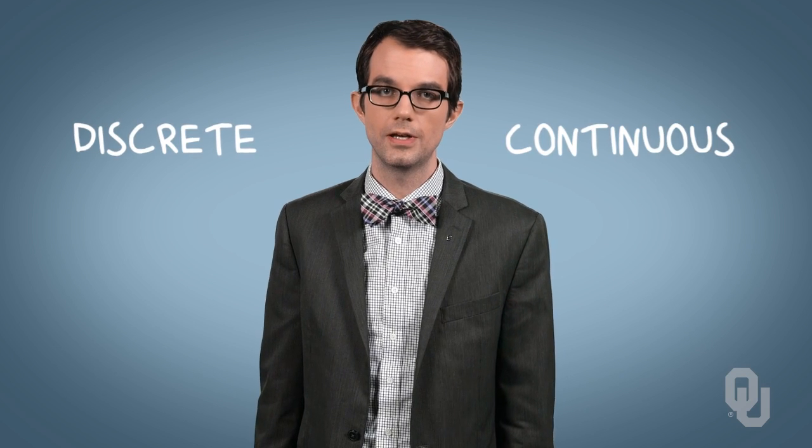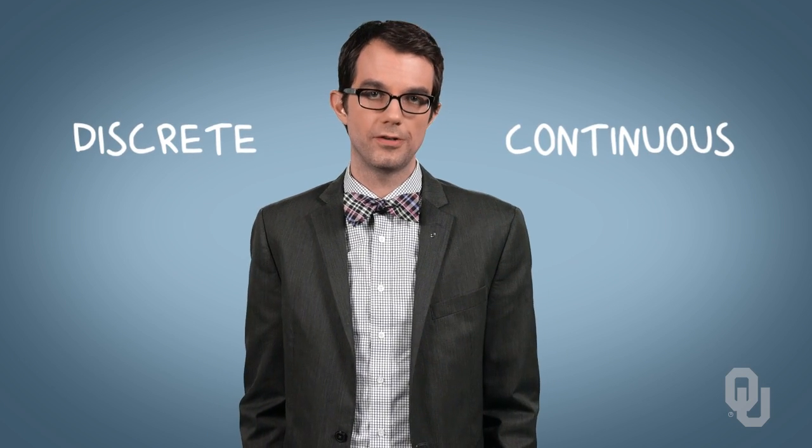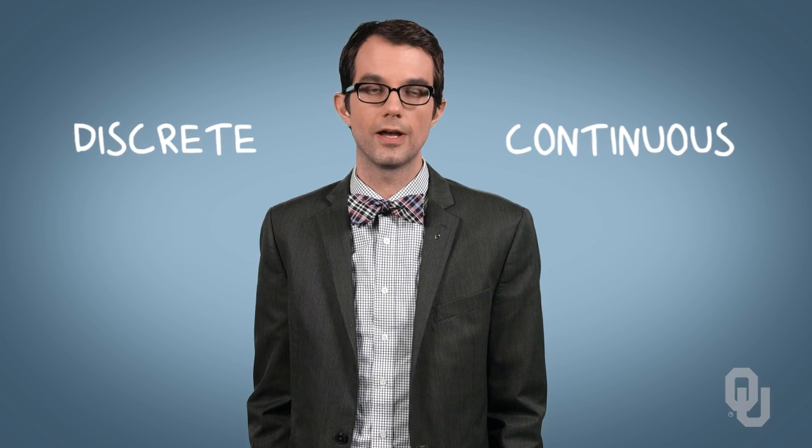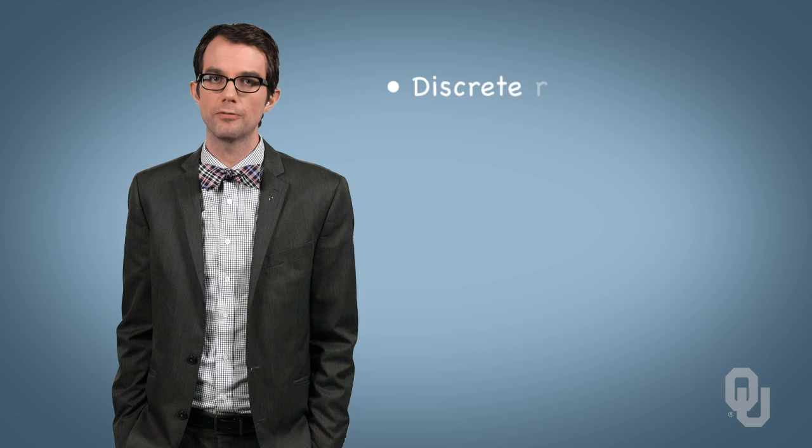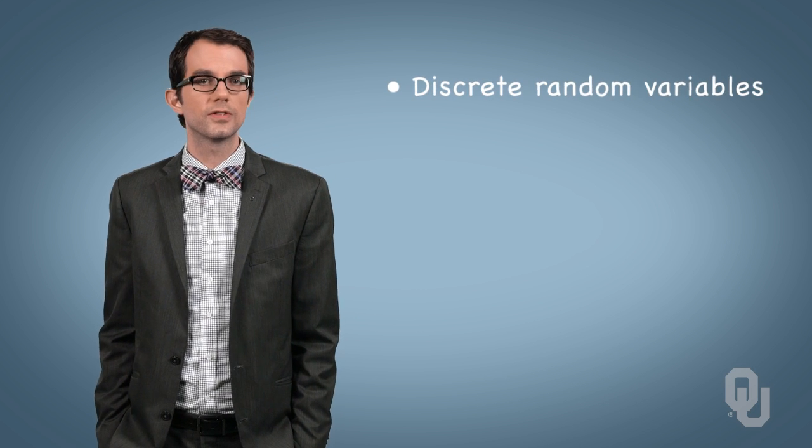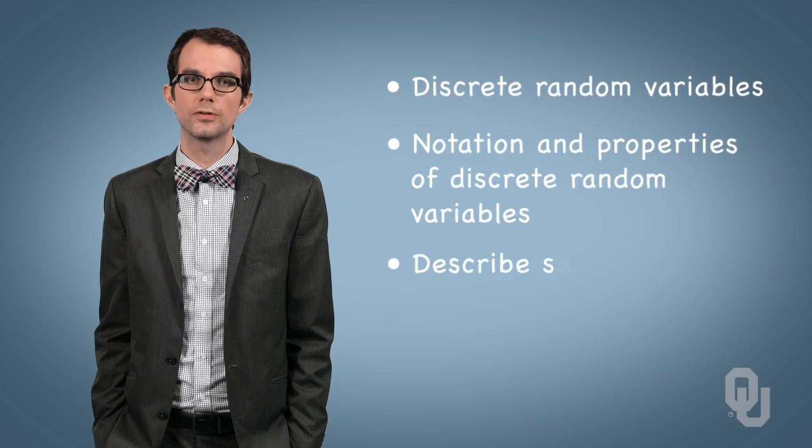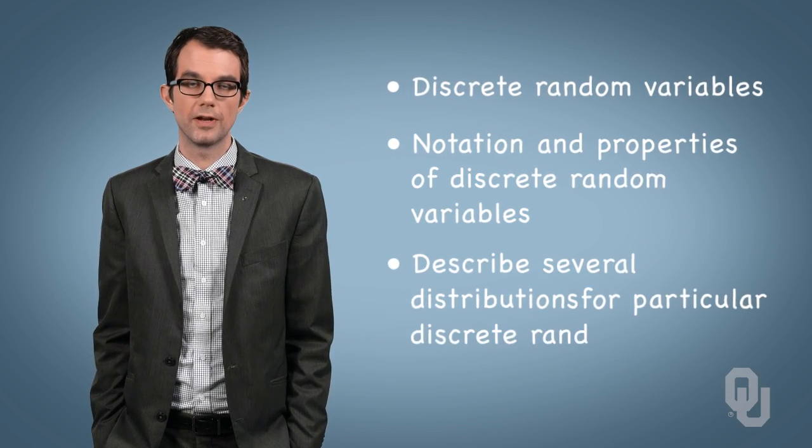We'll broadly characterize random variables as being either discrete or continuous. Discrete random variables take on a set of discrete values, whereas continuous random variables are measured on a continuous number line. We're going to focus on discrete random variables in this unit. We'll discuss the notation and properties of discrete random variables, and we'll discuss several distributions for particular discrete random variables.